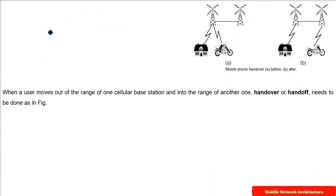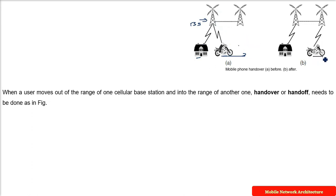When a user is moving out of range of one cellular base station — because every base station has a range — and moving from one E-NodeB to another, there has to be some handover or handoff. If a call or data connection is ongoing, the device needs to stay connected, so a swift and proper handoff must occur.